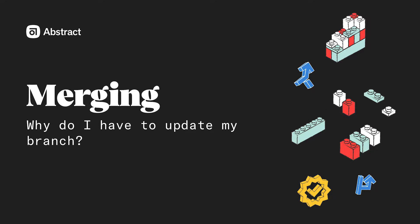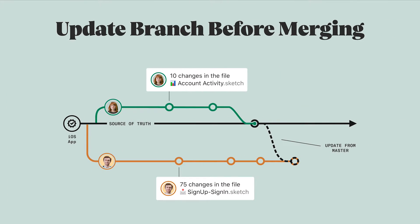You might be wondering why you see the Update from Master button or why you have to update your branch. Abstract allows designers to work in the same projects or files in parallel by using branches. Since you and your teammates will be working on your own tasks at your own pace, each branch will have a different timeline and will have to go through the merge process. When you're working on designs in your branch in Abstract, you may notice that sometimes the Merge Branch button is replaced by a button that says Update from Master, or Update from Parent if you're working in a child branch. So why are you seeing that button?